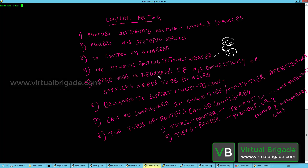The NSX-Edge is only needed if north-south connectivity or services need to be enabled. On the Tier1 logical router you can enable services like NAT and Edge firewall. If you want to configure NAT and Edge firewall on the Tier1 logical router, your logical router should be backed by the NSX-Edge nodes. If you don't enable those services, you don't really need the NSX-Edge.